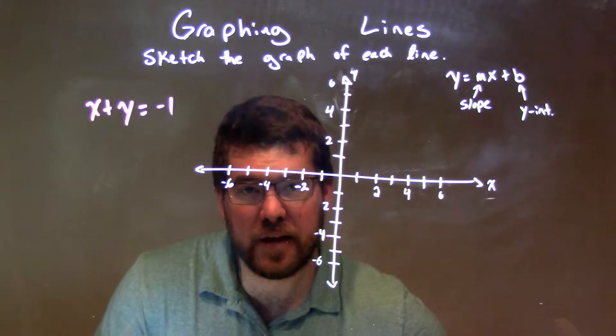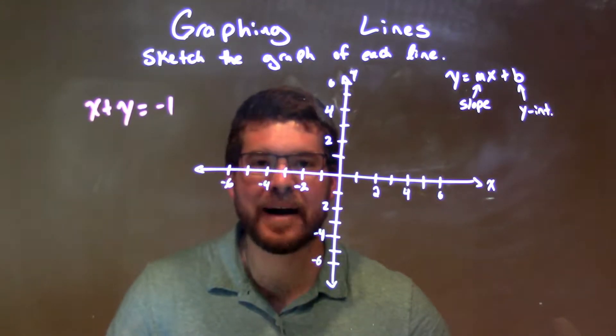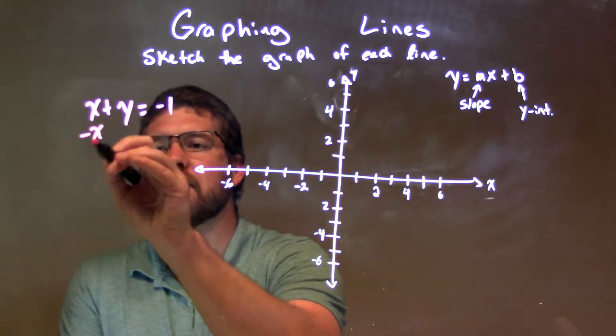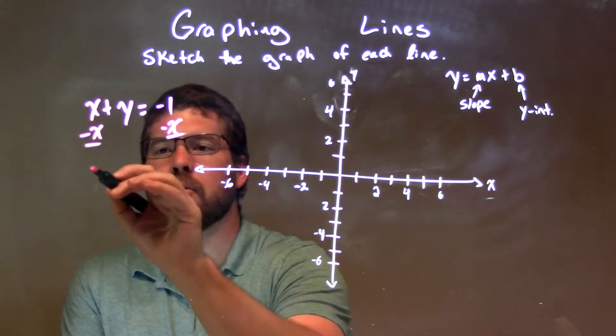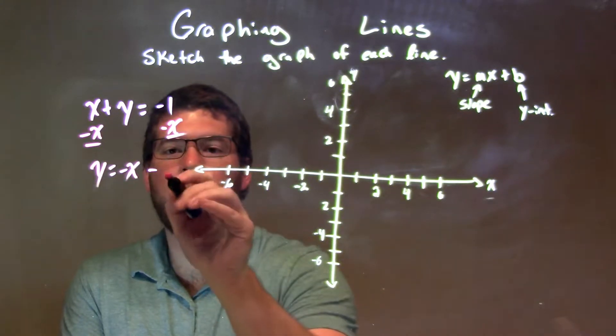Well, this is in standard form, and I like to see it in slope-intercept form, so I'm going to try to get y by itself to get that form. I subtract x from both sides, and that leaves me with y by itself equals negative x minus 1.